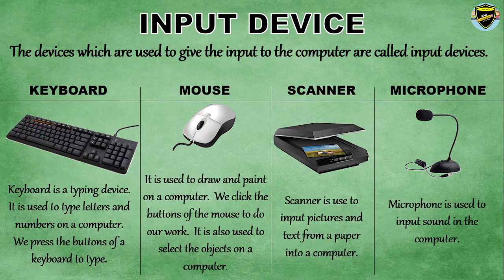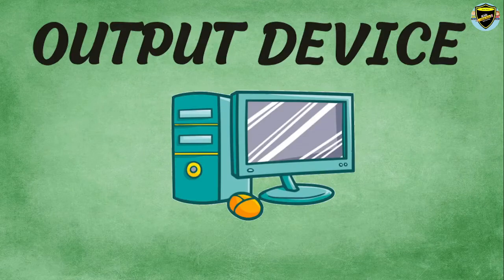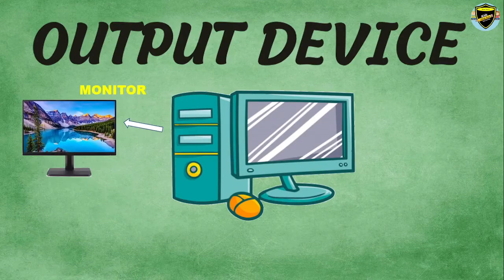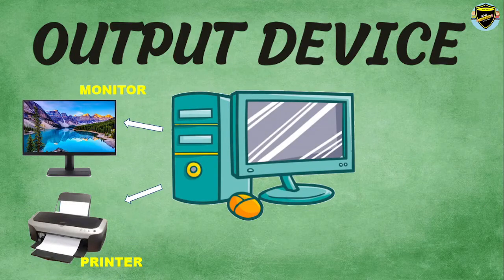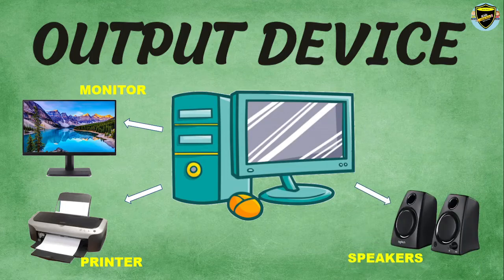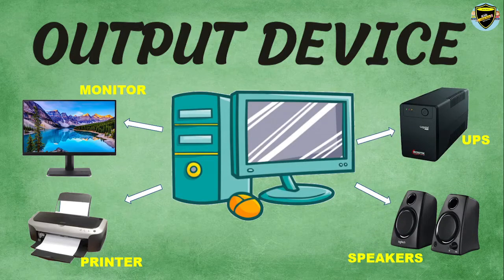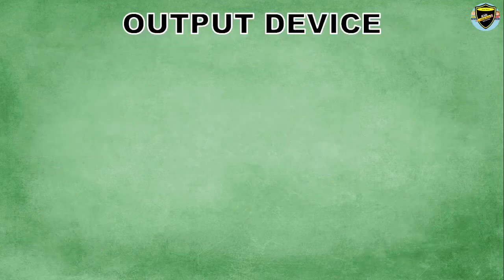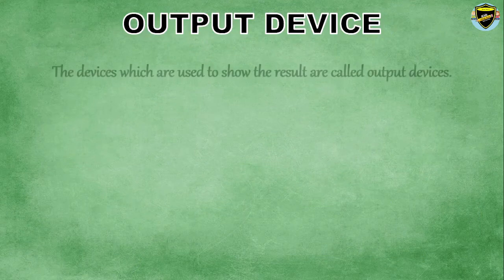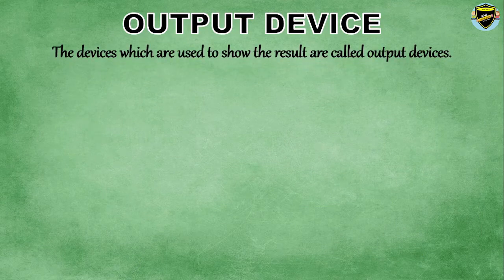Now moving on to output devices: monitor, printer, speaker, and UPS. Let us know about them in detail. Output device. The devices which are used to show the result are called output devices.